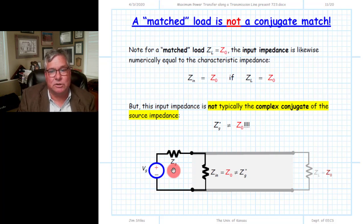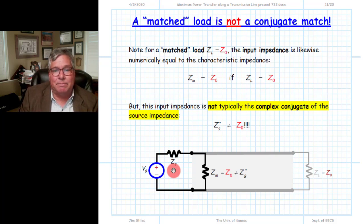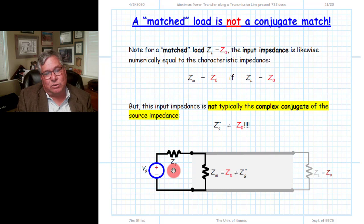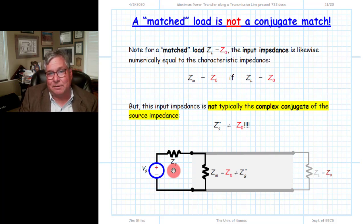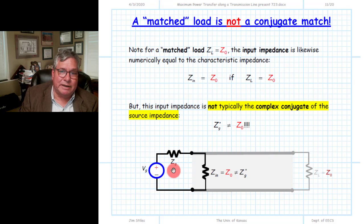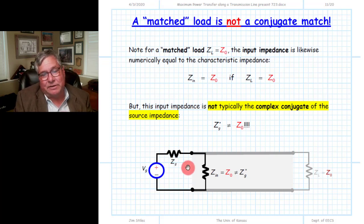A conjugate match occurs between an equivalent source and equivalent load such that they are related by complex conjugate. In that case, the power absorbed by the equivalent load equals the available power from the source — the maximum rate at which that source can deliver power. A matched load simply means none of the incident power is reflected, the reflected power equals zero, and the input impedance of the line equals Z0. Those are the only two things we can say about a matched load, and that may or may not result in a conjugate match — and generally speaking, it will not.